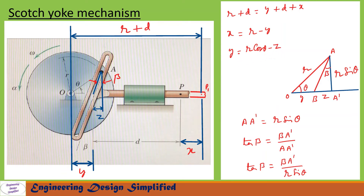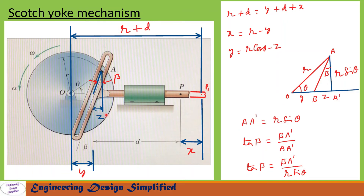Transferring the triangles to the diagram: the distance from O to A is r (crank radius) and the angle is theta. Drawing a vertical line, the distance from A to A' can be written as r·sinθ. The angle between the slot and the vertical is beta. From the diagram we can write tan β = z / (r·sinθ), so that is: tan β = z / (r·sinθ).